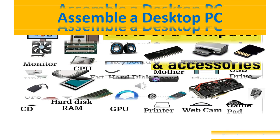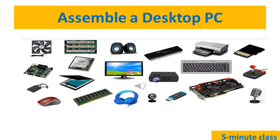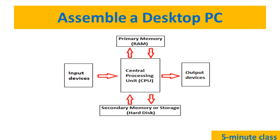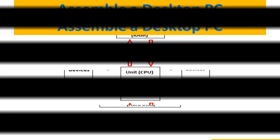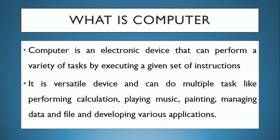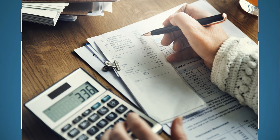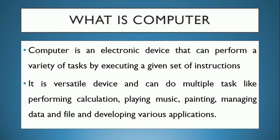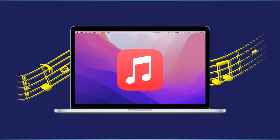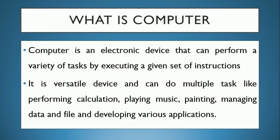What is a computer? A computer is an electronic device that can perform various tasks by executing a given set of instructions. Whatever set of instructions you give, step by step, the computer does it accordingly. It is a versatile device because it can do many things — it is multitasking. It can do calculations, painting, play music, manage files, and many more things.